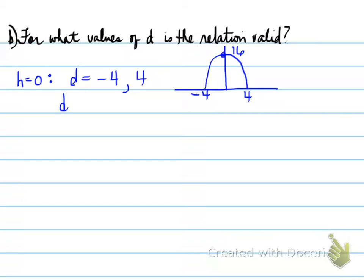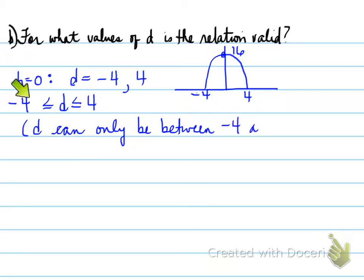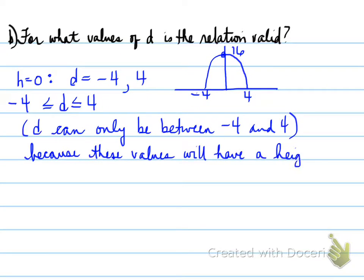So, those are the only d values. If I want to go bigger than negative 4, what happens is now our height is going to be a negative value. And, again, on this side, the height is going to be a negative value. So, the d values can only be between the two values of negative 4 and positive 4. So, you can write that mathematically, and that's the statement mathematically, folks, or you can write it in words. d can only be between negative 4 and 4 because these values will have a height that is greater than or equal to 0.